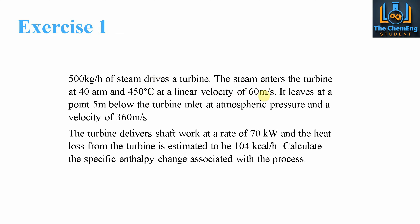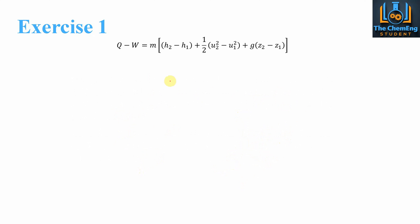Now for a quick exercise: 500 kilograms per hour of steam drives a turbine — a negative work value, as discussed. The steam enters the turbine at 40 atmospheres and 450 degrees Celsius at a linear velocity of 60 meters per second. It leaves at 0.5 meters below the turbine inlet at atmospheric pressure and a velocity of 360 meters per second. The turbine delivers shaft work at a rate of 70 kilowatts and the heat loss is estimated to be 104 kilocalories per hour. We need to calculate the specific enthalpy change, delta H, associated with the process.